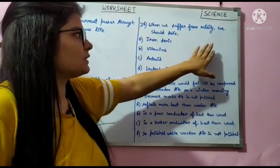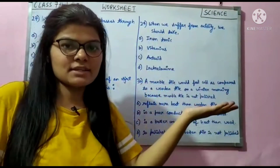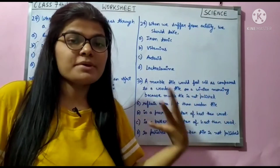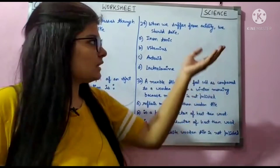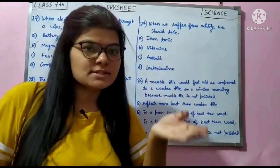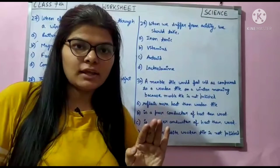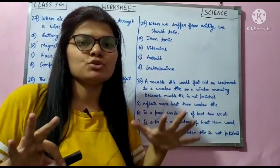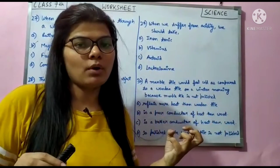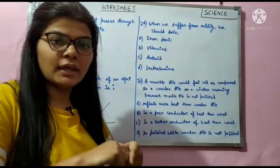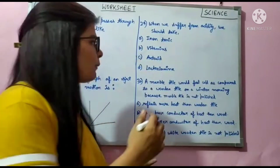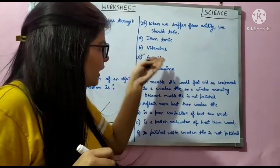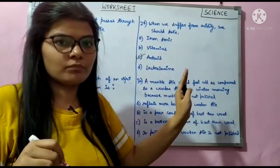Question number 29: when we suffer from acidity — we've seen many TV ads for this. Acidity means excess acid, excess hydrochloric acid in the stomach. To neutralize it, a base is given. When acid and base combine, the medium becomes neutral and we feel relief. Products like Eno and Digene are antacids — they work against acid. Anti means against acid.